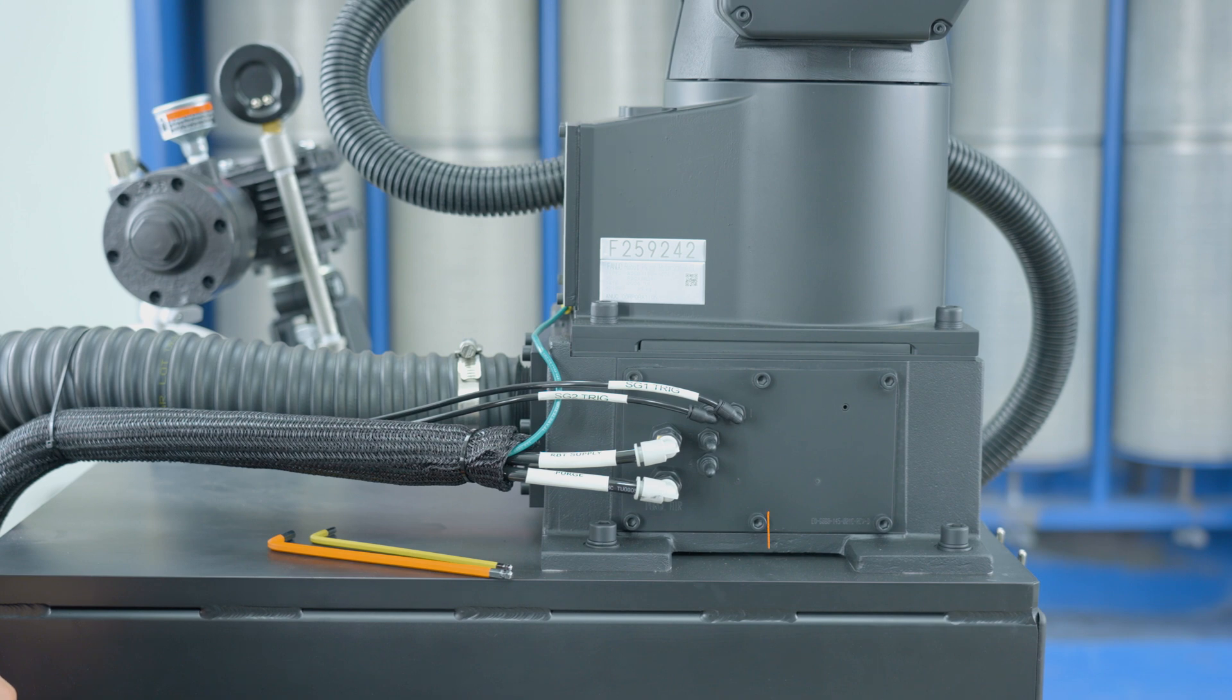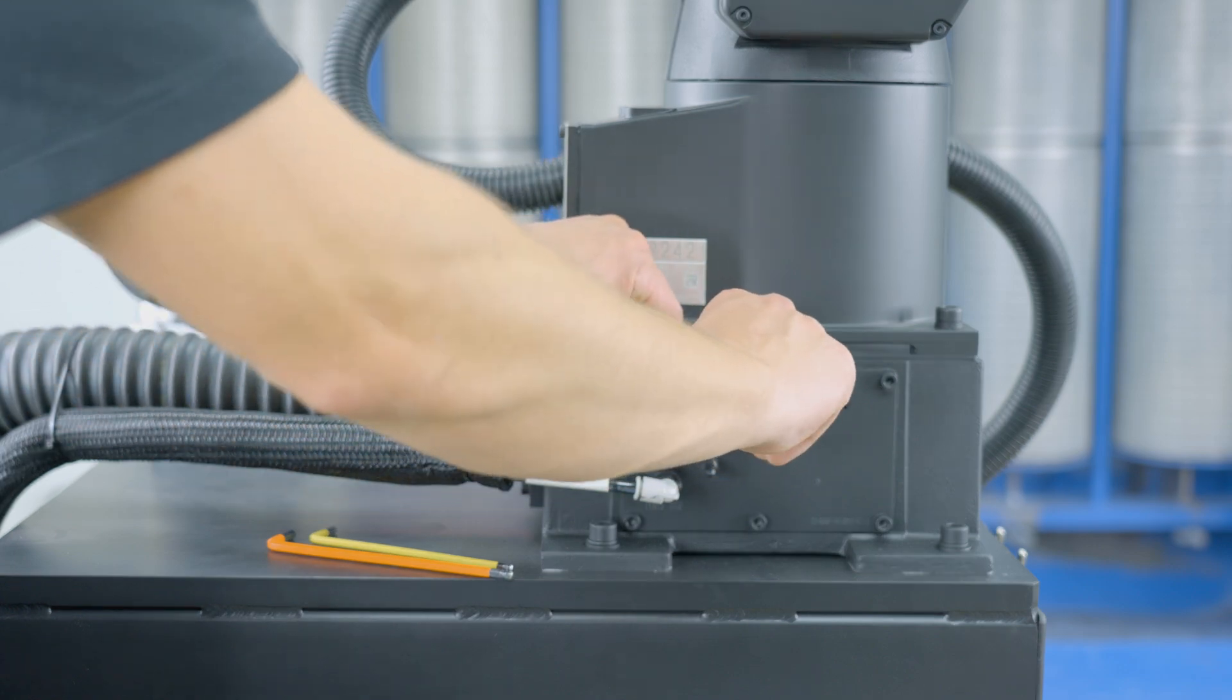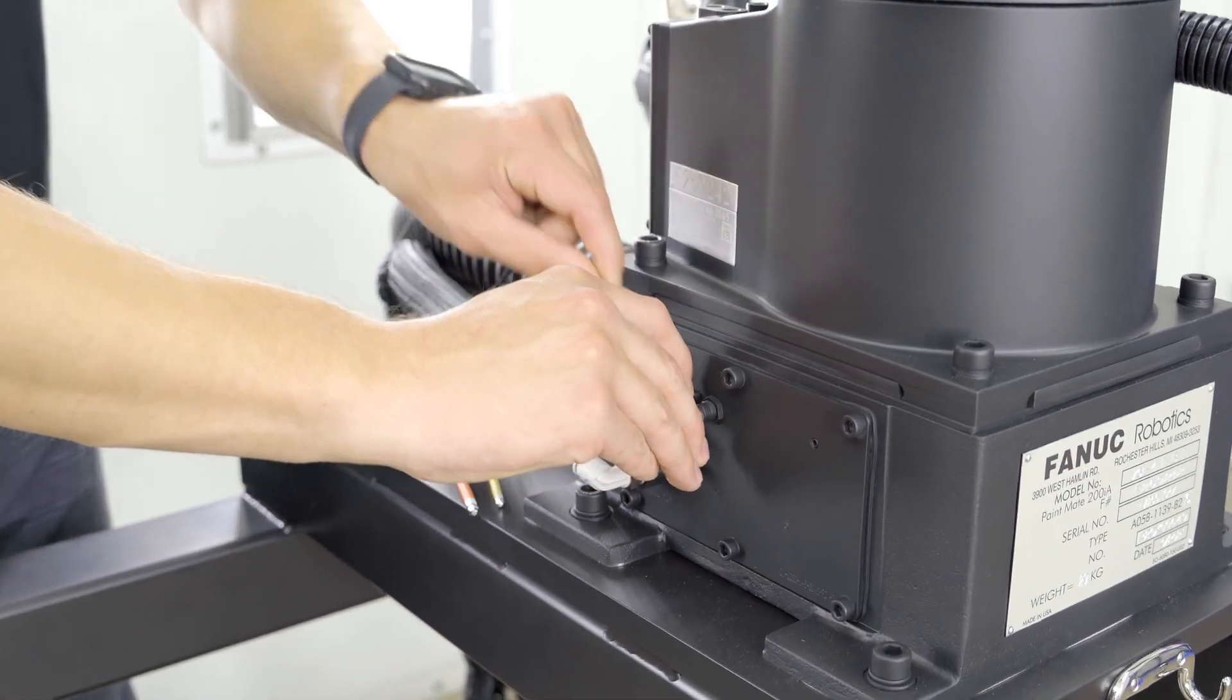Begin by photographing the pneumatic lines going into the base of the robot. Proceed to depress the collar and remove them from their socket.